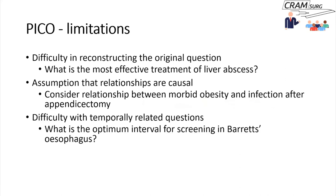What about temporally related questions? There's a question like: what's the optimum interval for screening in Barrett's esophagus? In Barrett's esophagus, we do endoscopy to look for esophageal cancer — annually or biannually or whatever. If you're interested in the optimum interval and want to search the literature or do a study, you're going to struggle to put this into a PICO format. You might have to make assumptions, such as comparing one-year screening versus biannual screening and looking at long-term prognosis.